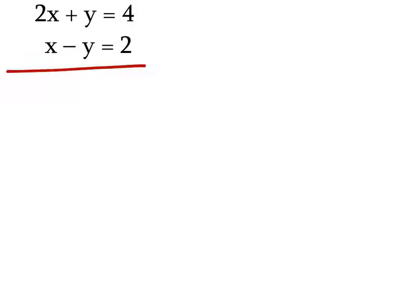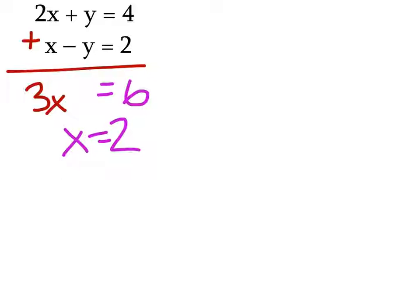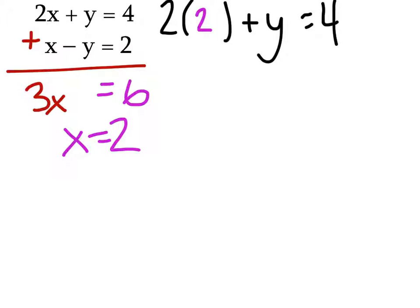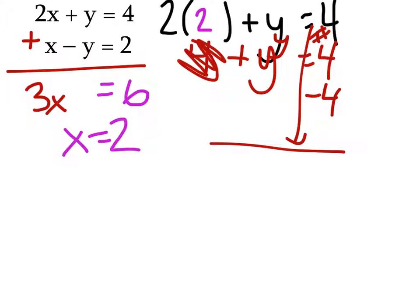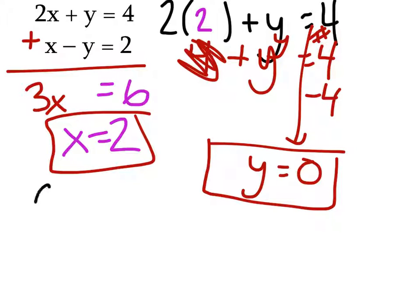Number 3. We're just going to combine these. 2X plus X will be 3X. Y minus Y is 0. So this should equal 4 plus 2, which is 6. X equals 2. Now that we know X equals 2, let's plug it into the top equation. 2 times X, which is 2, plus Y equals 4. What's 2 times 2? 4. 4 plus Y — switch and stay game. Y is on the left, number is on the right. This 4 is going to switch to negative 4, so Y equals 0. Done. The coordinate pair would be 2, 0.